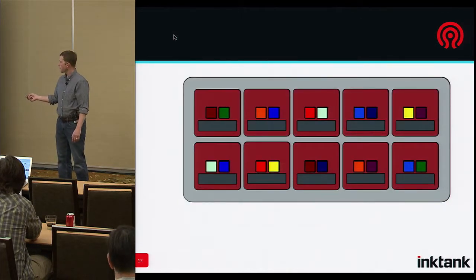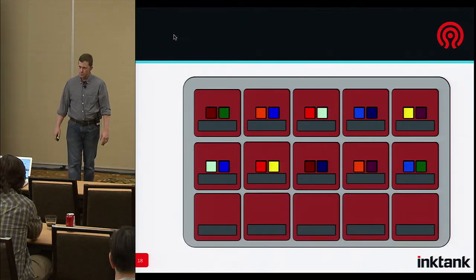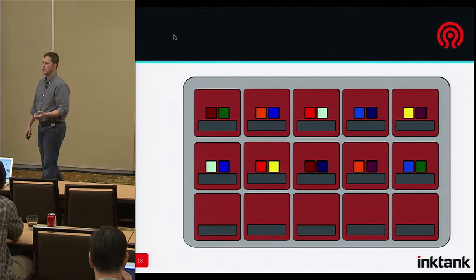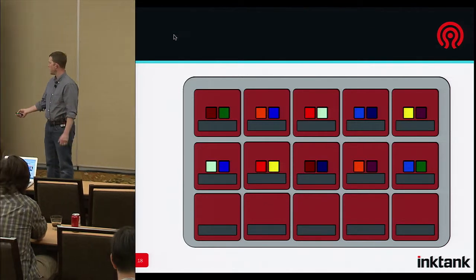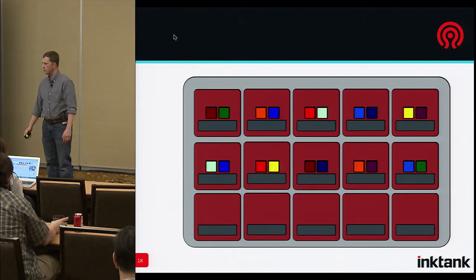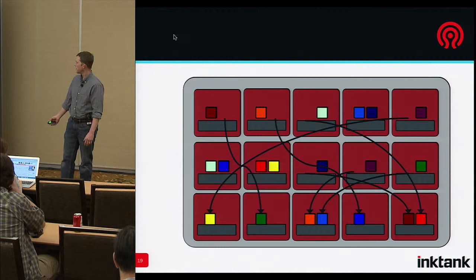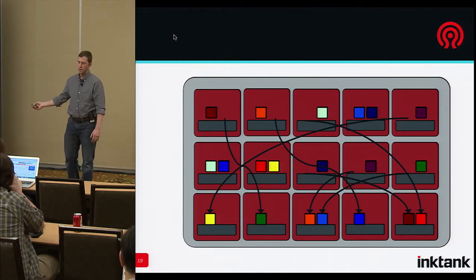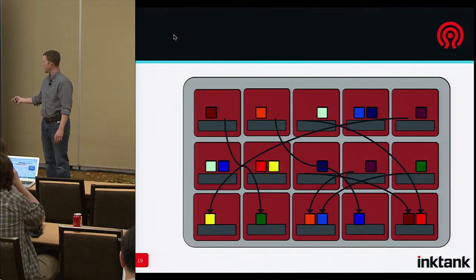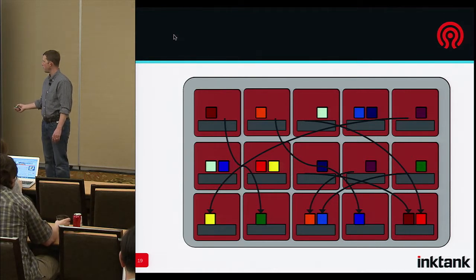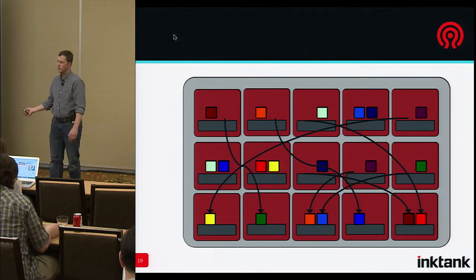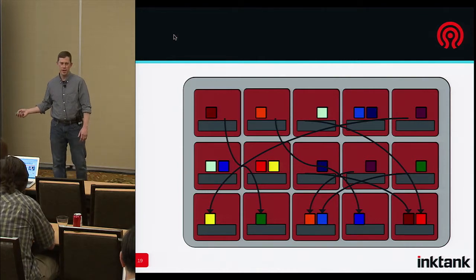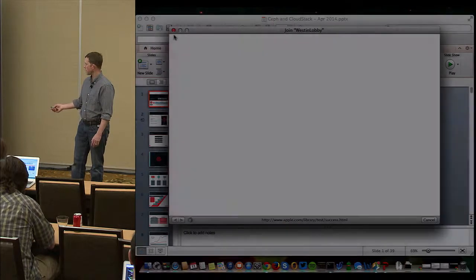So what happens when you add more storage? Now we've got the opposite issue — instead of having a failed device, now I've got an additional rack of storage. Well, again, it just rebalances. It calculates, okay, given my new set of rules and the new map of the available storage that I've got, how can I satisfy that? And shuffle stuff around.